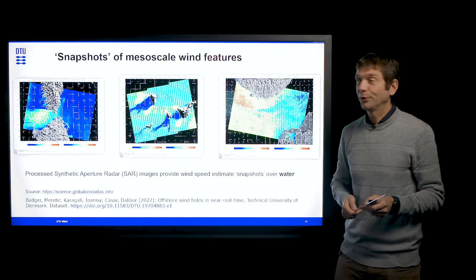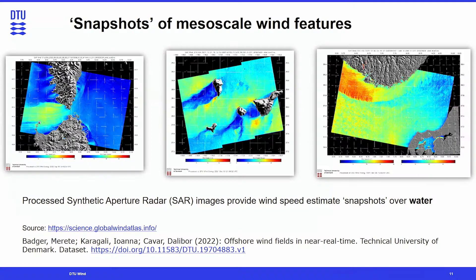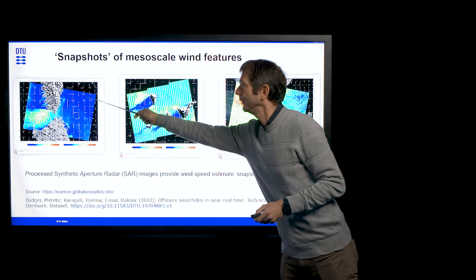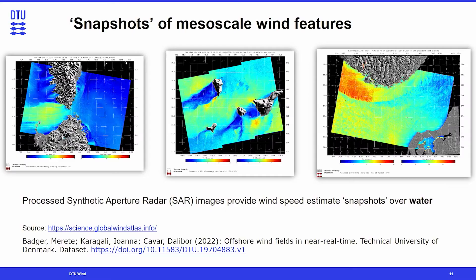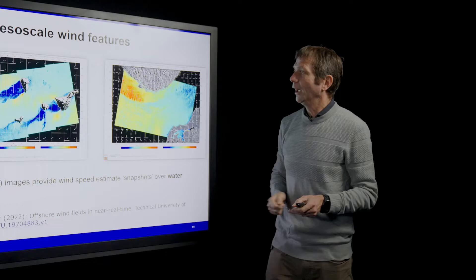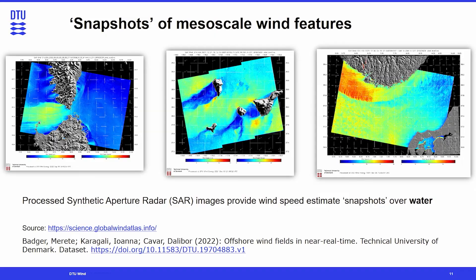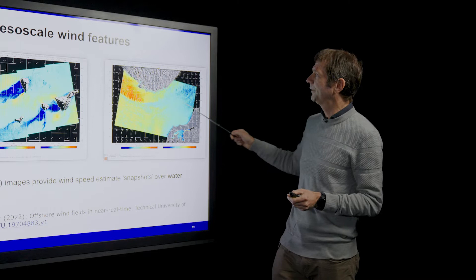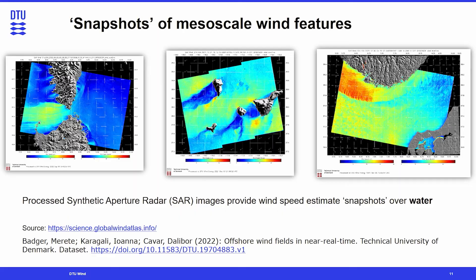This slide shows snapshots of mesoscale wind features provided by synthetic aperture radar, which can be processed to give wind speed estimates over the sea. These are quite fascinating: you can see enhanced wind speeds occurring in gap flows — for example, between Corsica and Sardinia. Around the Canary Islands, we see reduced wind speeds in the wake of the islands, speed-up on the shoulders of the islands, and slowdown ahead of them. We also see the flow around Norway and Denmark, where the high elevation of Norway and low elevation of Denmark produce a quite different nature of flow around those two countries.